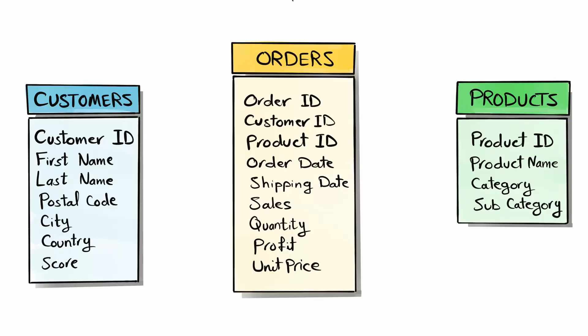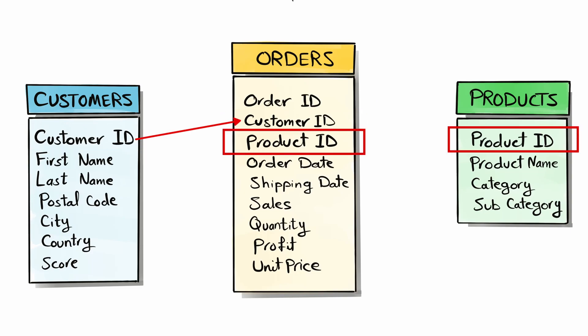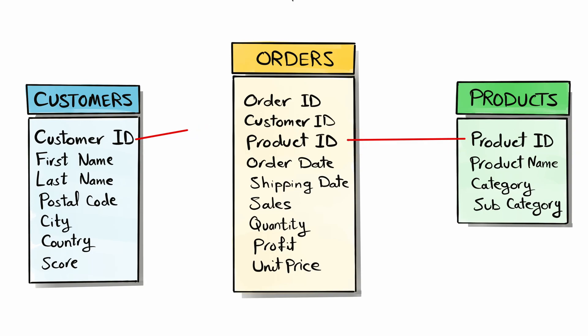We also have relationships between the three tables. There is a relationship between Orders and Customers — they can be connected using the Customer ID. And if you check Orders and Products, you can find another relationship using the Product ID, which allows us to connect those two tables as well.